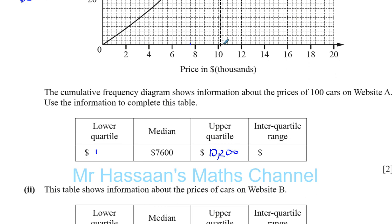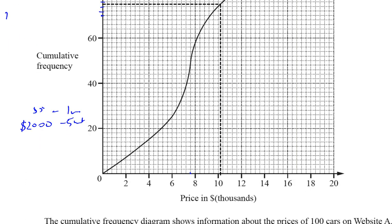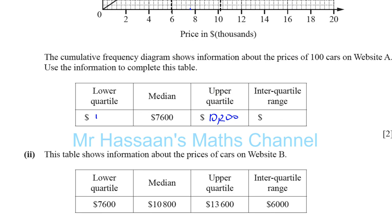Now for the lower quartile: as you can imagine, it's a quarter of the way up — the 25th percentile. So we go to twenty-five on the y-axis. Counting: thirty, twenty-two, twenty-four, twenty-six — twenty-five is right there. Drawing the line across and down, it appears to hit right on the line at six thousand. So the lower quartile is six thousand.